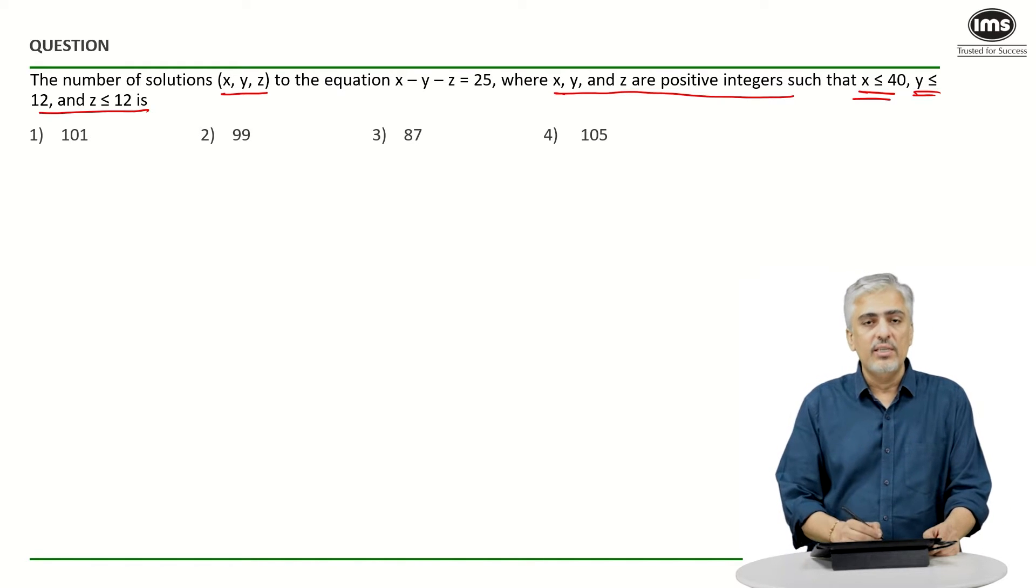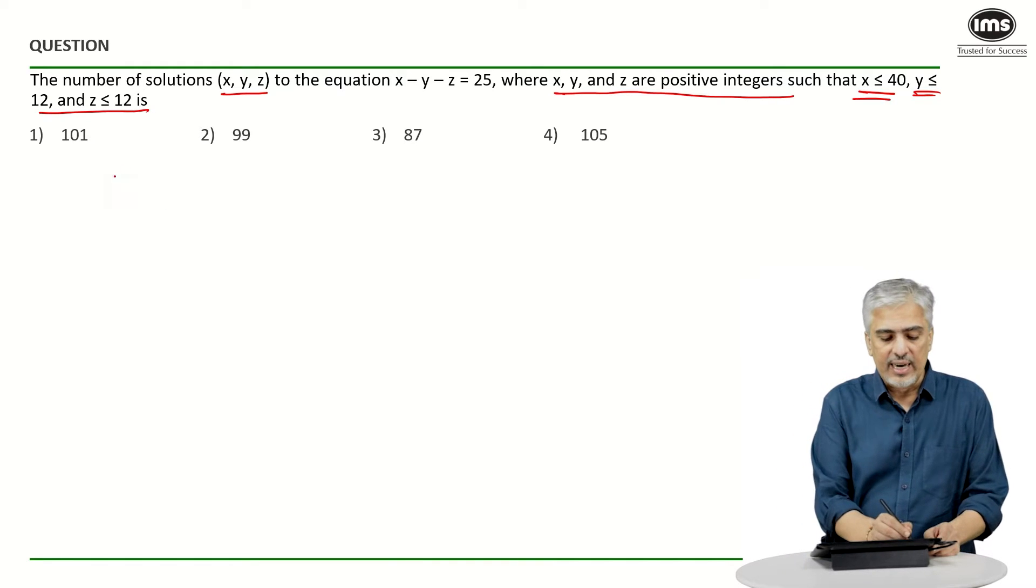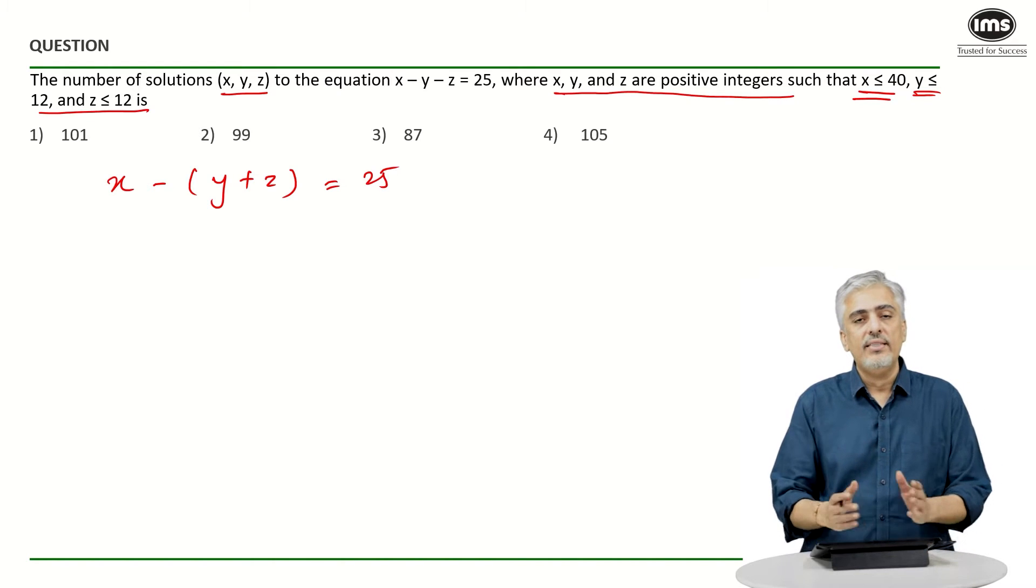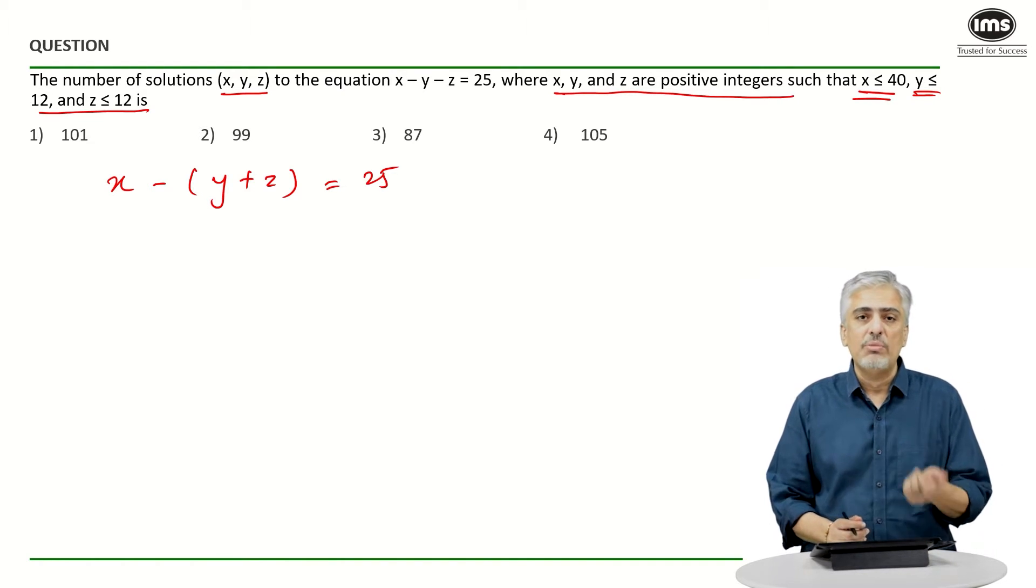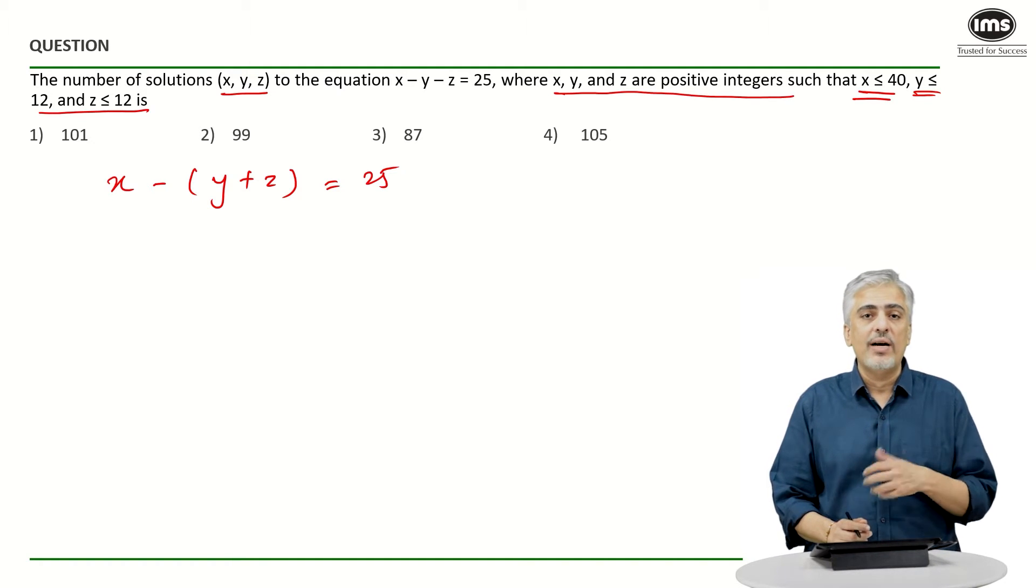Now let's see how we go about this question. First thing I would do is try to write this as x minus (y plus z) equals 25. Now if you look at the conditions for y and z, they're exactly the same. Both have to be positive, both have to be less than or equal to 12. That means the maximum values we can take for y and z are 12, 12, and same way for x is 40.